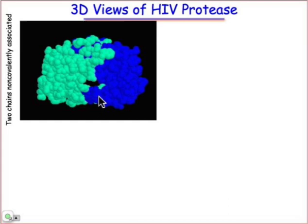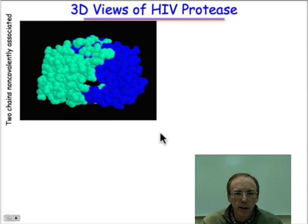It's known that the way this active site binds its substrate is by having these two flaps basically open up. So they can spring open and collect the substrate, engulf it in the enzyme active site, and subject it to catalysis.